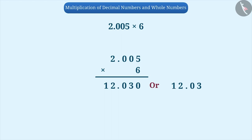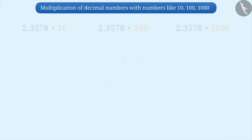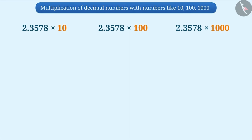Adding or removing a zero after the last non-zero digit in a decimal number will not change the value of that number. If we multiply decimal numbers by numbers like 10, 100, or 1000, we can see a pattern. Let's understand it.